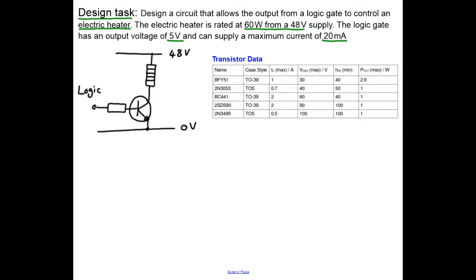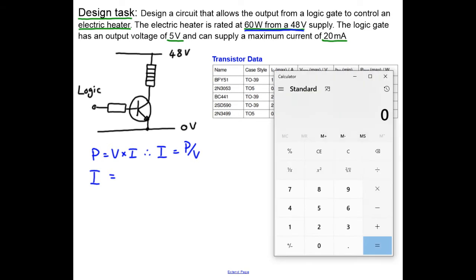We've designed the circuit, but there's still some numbers to put on. So the first thing we're going to do is use the information about the heater to work out how much current flows through the collector. We know that power equals V times I. And therefore, I equals P over V. And therefore, in this case, I equals, we need to get our windows calculator. Here it is. And we do 60 divided by 48 equals. And that comes out to be 1.25 amps. And this is the collector current. So we can draw it on here. IC is 1.25 amps.